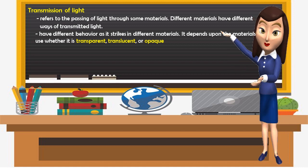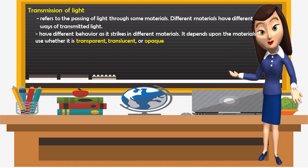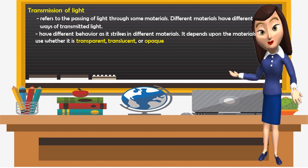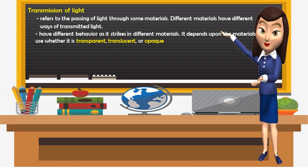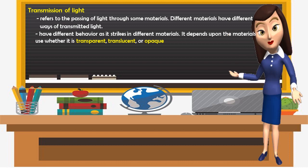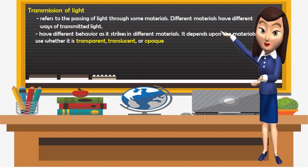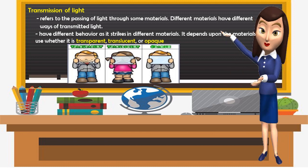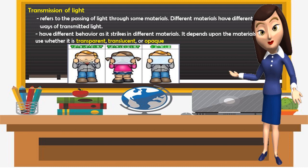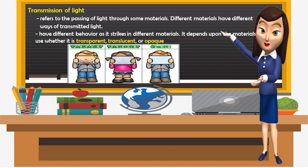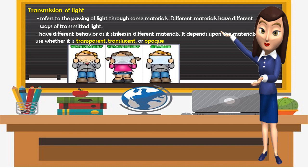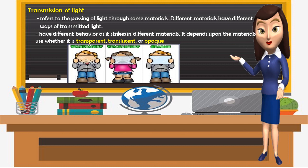Let's discuss first the transmission of light. Transmission of light refers to the passing of light through some materials. Different materials have different ways of transmitting light, and transmission of light behaves differently as it strikes different materials. It depends upon the material used — whether it is transparent, translucent, or opaque. In transparent materials, the face of the boy is visible; in translucent materials, the face of the girl is blurred; and in opaque materials, the face of the boy cannot be seen — it's black.